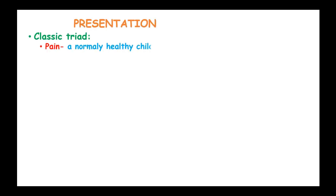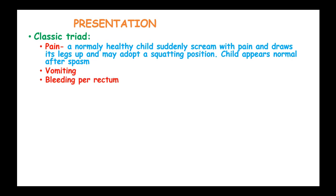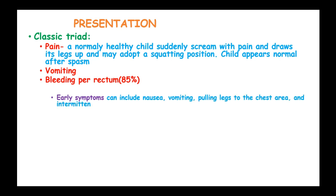The clinical presentation of intussusception involves a classic triad of pain — the normally healthy child suddenly screams with pain and draws its legs up, and may adopt a squatting position — vomiting, and bleeding per rectum, which occurs in 85% of cases. Early symptoms include nausea, vomiting, pulling legs to the chest, and intermittent moderate to severe cramping of the abdomen.